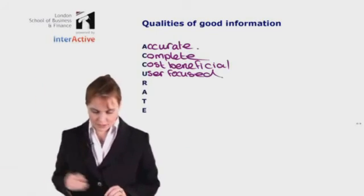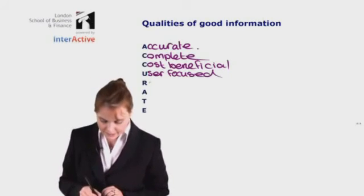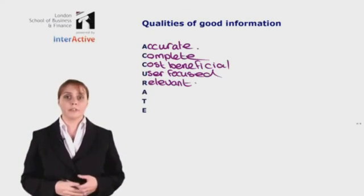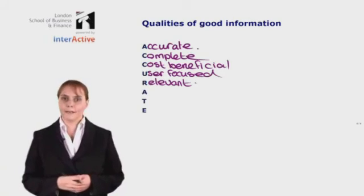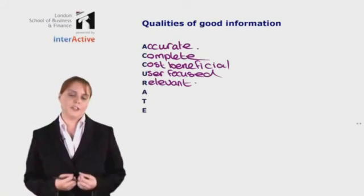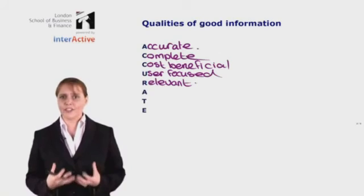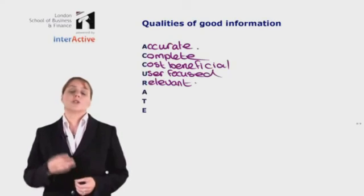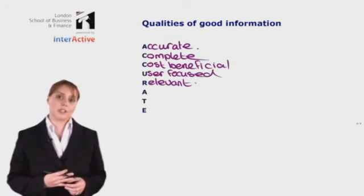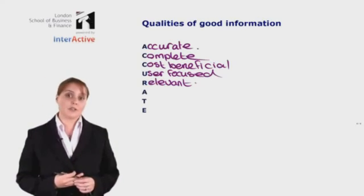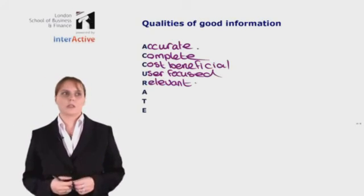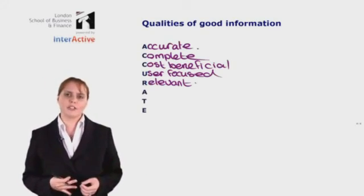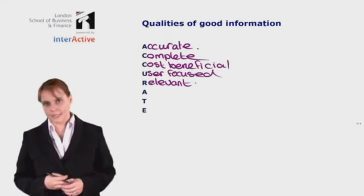Our next characteristic of good information is that it needs to be relevant. There's a huge amount of information out there, and the information provided to the user needs to be relevant to the decision they are making or relevant to its purpose. So if I'm looking for directions to the train station and the person starts giving me a full history of England, that might be fascinating information, but it's not telling me how to get to the train station.